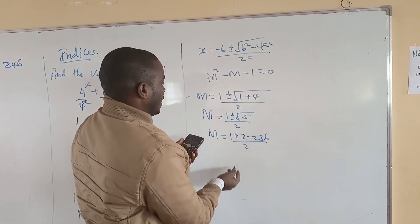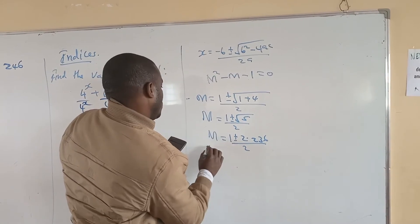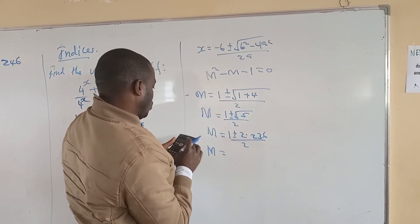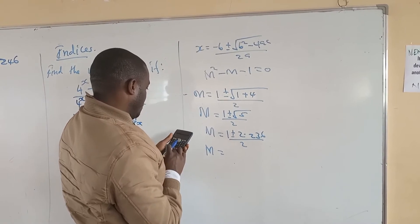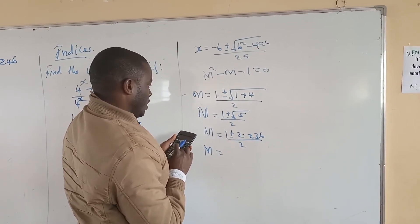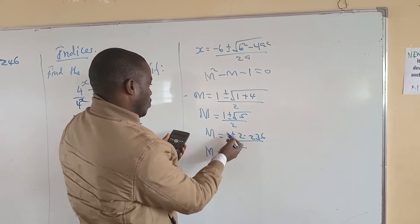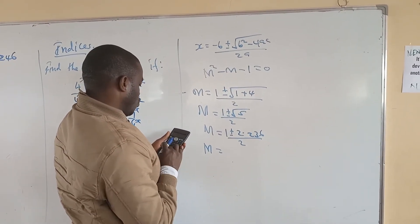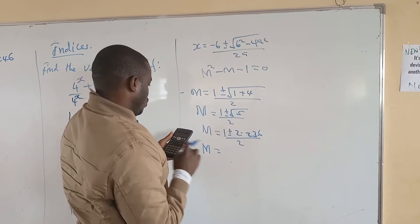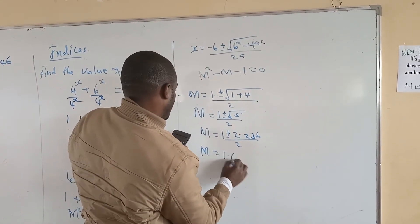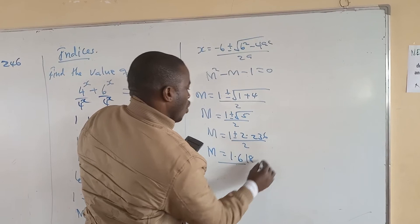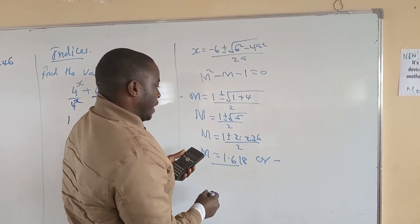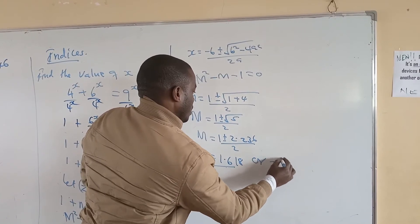Taking the positive value: 1 plus 2.236 equals 3.236, divided by 2, gives m equals 1.618. Taking the negative value gives a negative result for m.